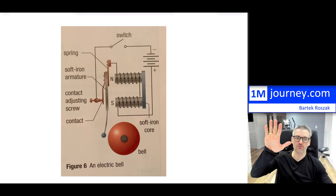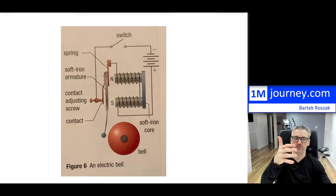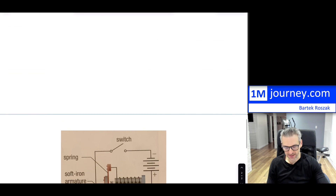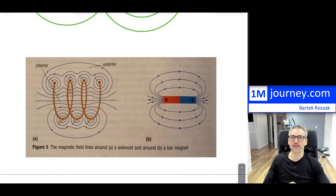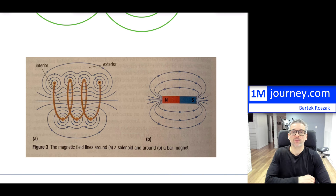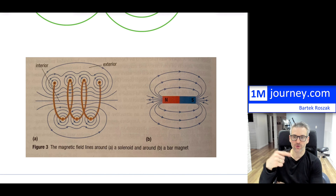To summarize how it works: put your right hand in the direction of the current, wrap it around the solenoid, and the interior shows the direction of the north pole. This is all based on conventional current flow. To increase the magnetic field strength, you can increase the current — for example by increasing the voltage.